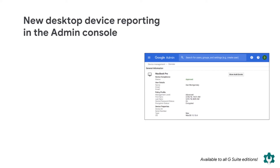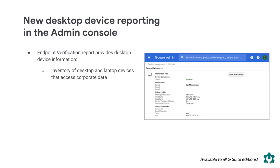We're giving you more visibility into the computers being used to access your corporate data and apps through a new feature called Endpoint Verification. This feature collects information via Chrome extensions and native apps on a user's devices and displays that information in a new report. With Endpoint Verification, you'll be able to see in the admin console an inventory of desktop and laptop devices within the enterprise that access corporate data, and device information including screen lock, disk encryption, and OS version.